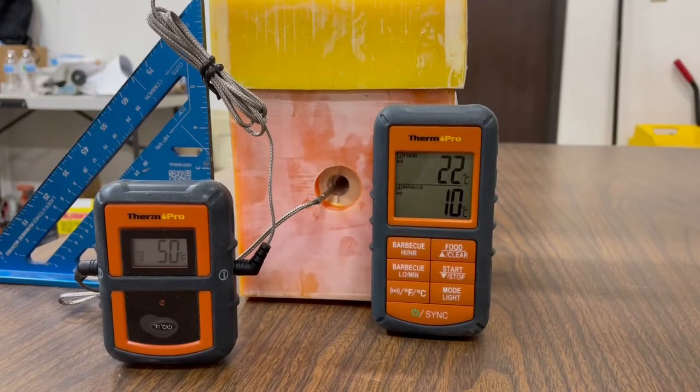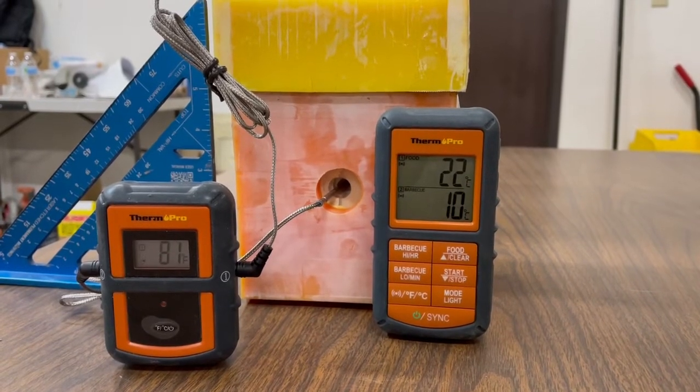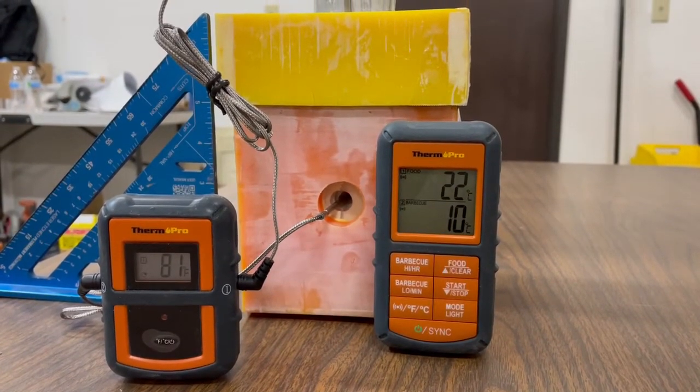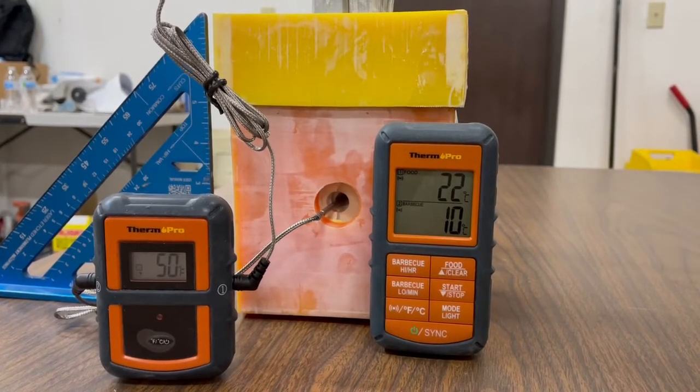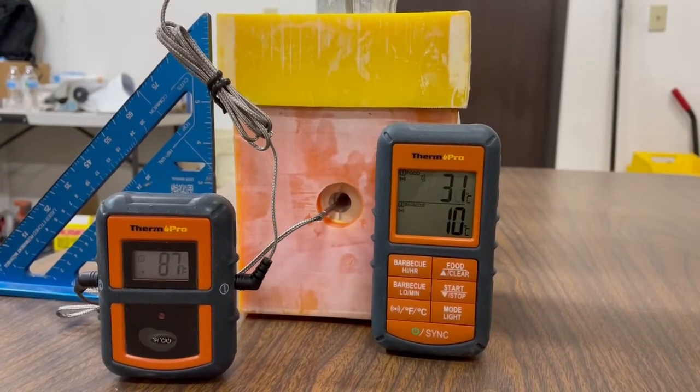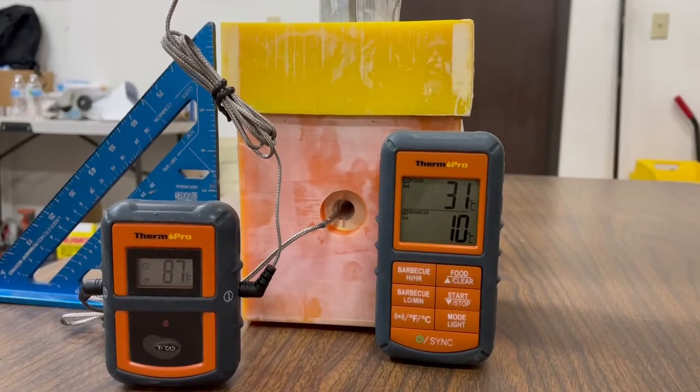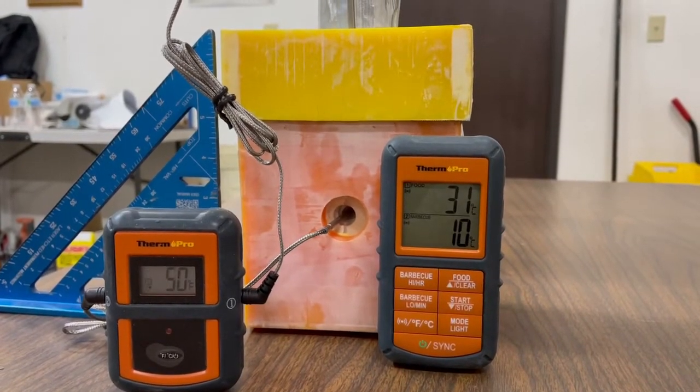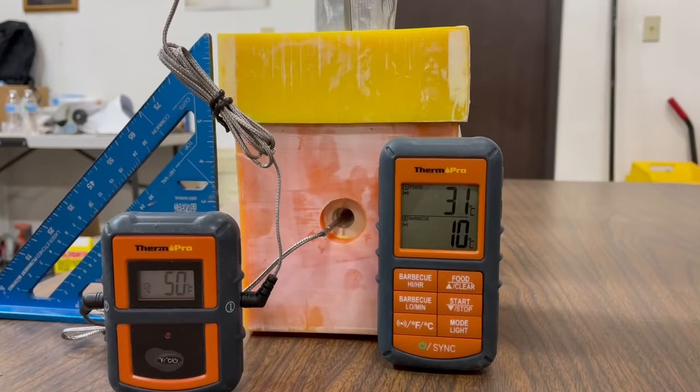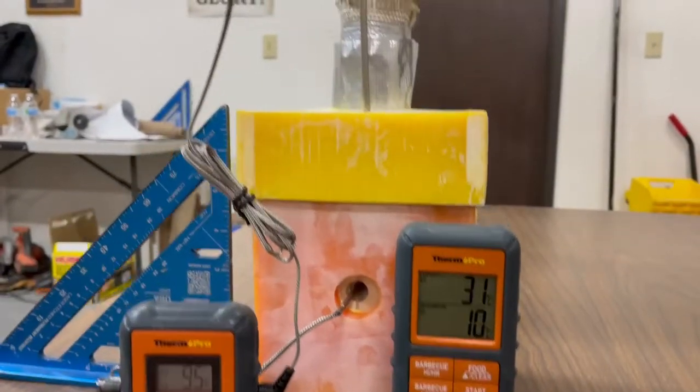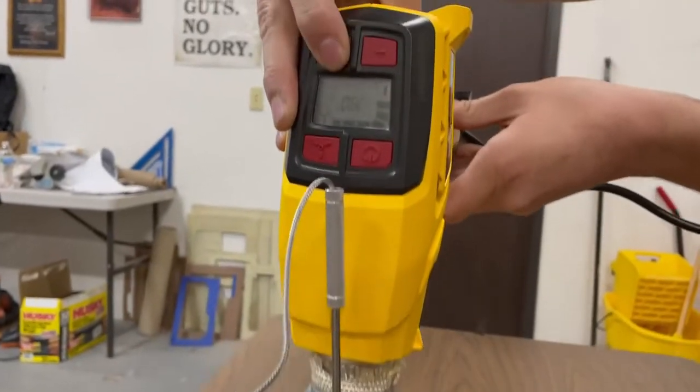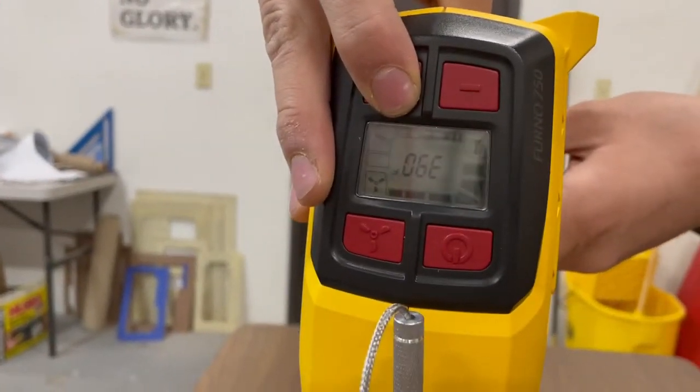We can see the rise of temperature in the inlet chamber, currently at 22 degrees. The output is at 10 degrees Celsius. Temperature rises to 31 degrees Celsius. The output remains 10 degrees. Let's blast the heat gun to its full power of 1300 CFM.